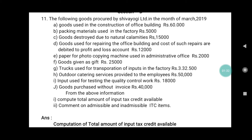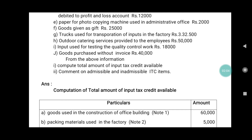Eighth, outdoor catering service provided to employees: Rs. 50,000. Ninth, input used for testing the quality control of work: Rs. 18,000. Tenth, goods purchased without invoice: Rs. 40,000. From the above information, we are supposed to compute the total amount of input tax credit available, and also comment on admissible and inadmissible ITC items.